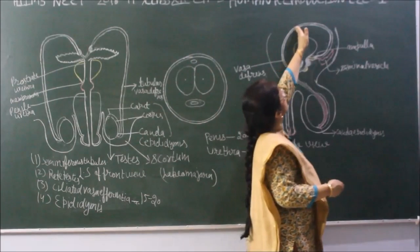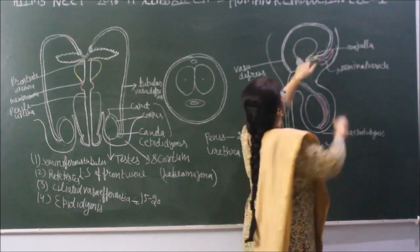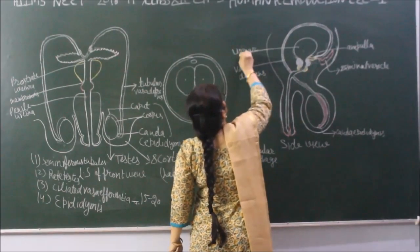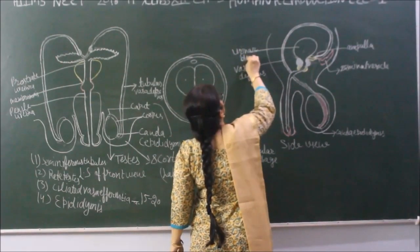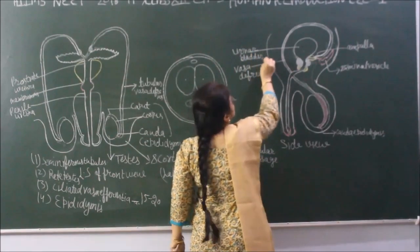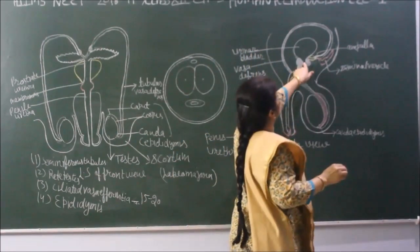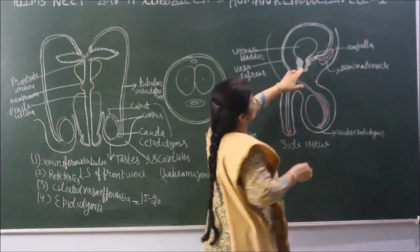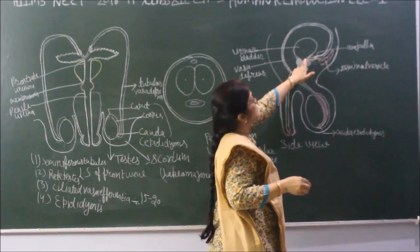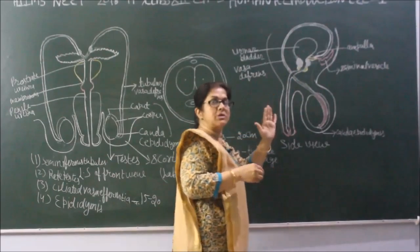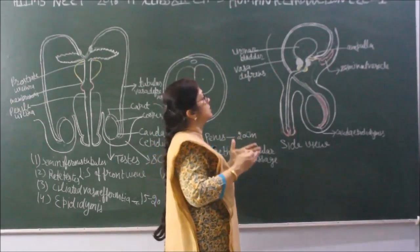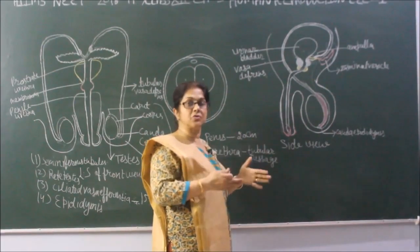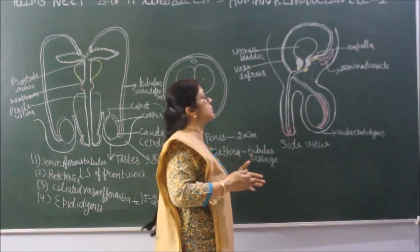The vas deferens curves over the urinary bladder and then opens into the urethra. The urethra is a urinary passage that carries both sperms and urine in males, whereas in females the urethra only carries urine.